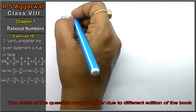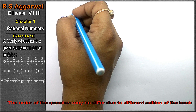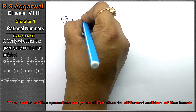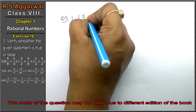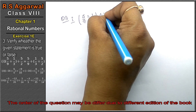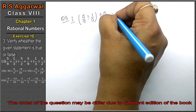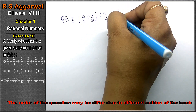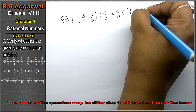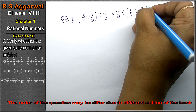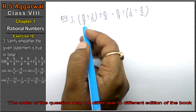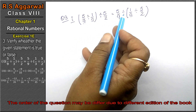Question number three: verify whether the given statement is true or false. The first part is: (5/9 ÷ 1/3) ÷ 5/2 equals 5/9 ÷ (1/3 ÷ 5/2). Friends, the left side is the associative property of multiplication and the right side is the associative property of division.